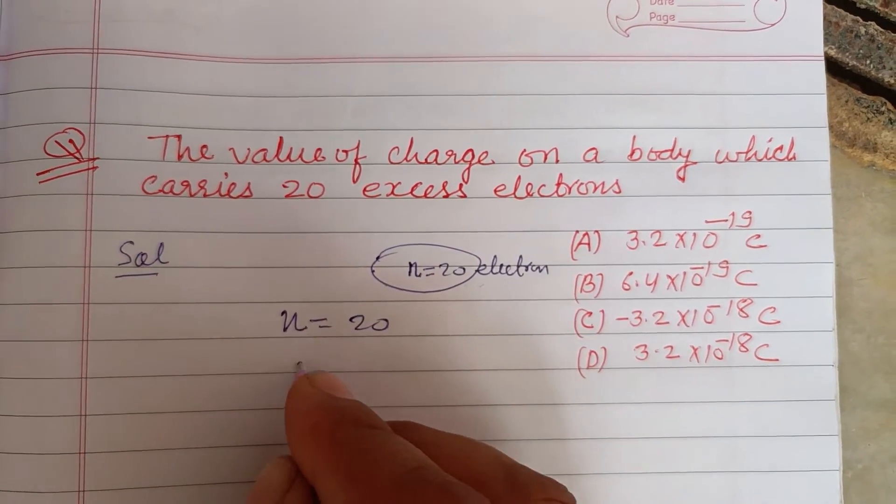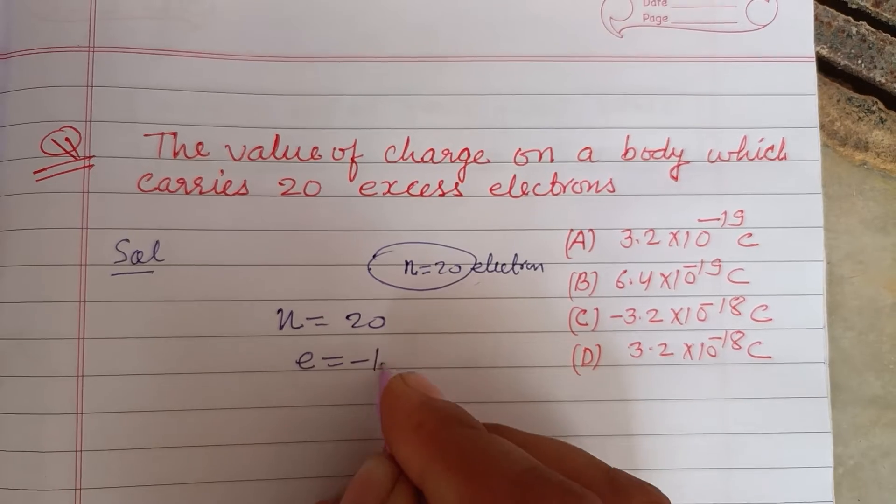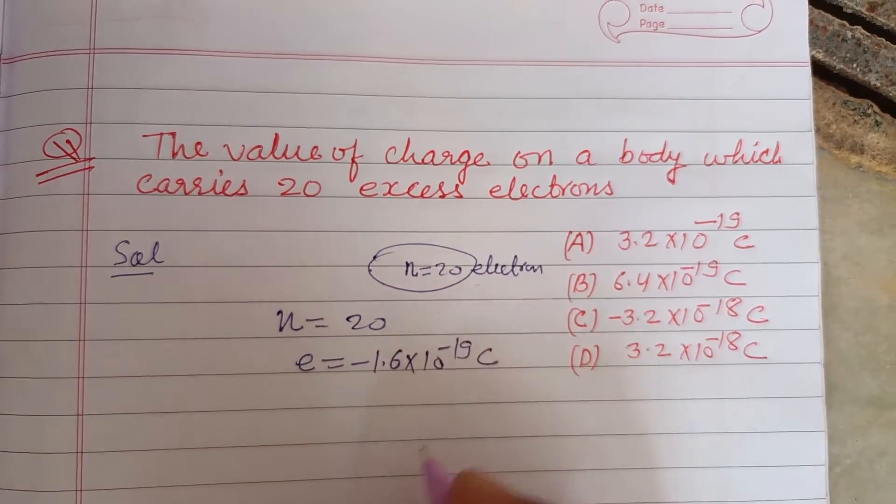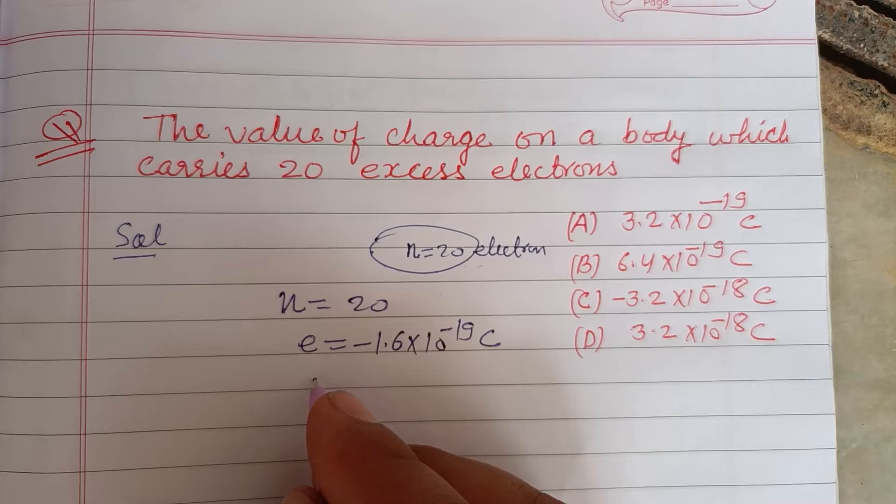20. And you know that the electronic charge is minus 1.6 times 10 to the power minus 19 coulombs, so charge